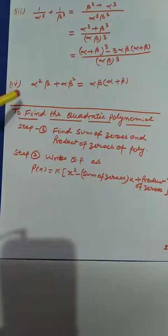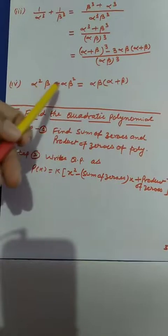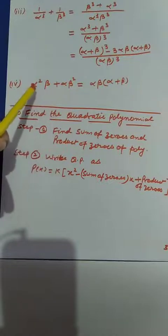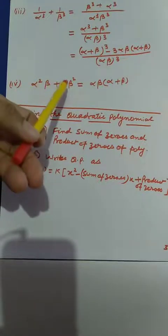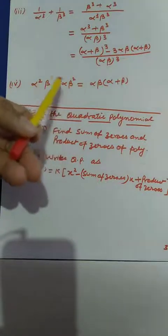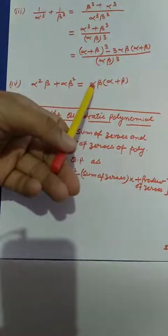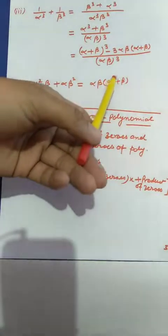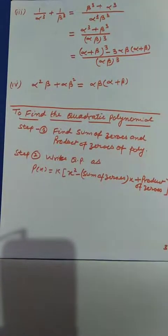Similarly, for alpha²·beta plus alpha·beta², I can take out alpha·beta as a common factor. The result can then be converted into the form of alpha plus beta and alpha·beta as alpha·beta multiplied by (alpha plus beta).